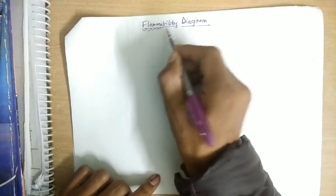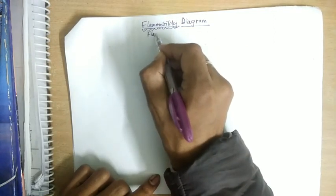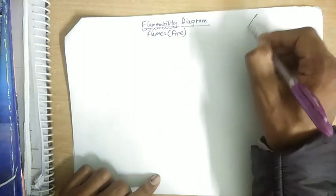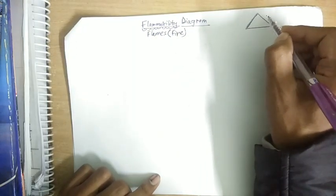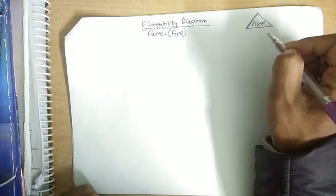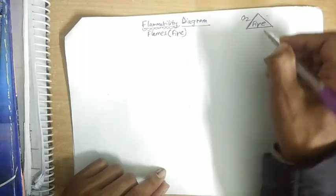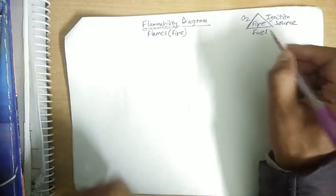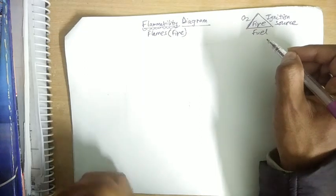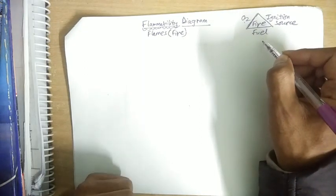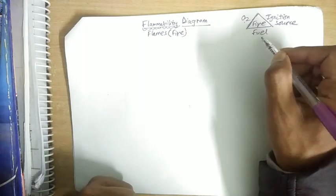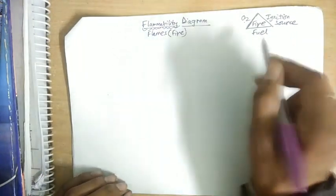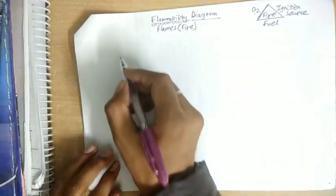The flammability diagram relates to the ability to cause flames, i.e., fire. For a fire to occur we need three things — represented by the fire triangle: oxygen, fuel, and an ignition source. All three components must be present; oxygen and fuel alone won't cause fire without an ignition source, and fuel plus ignition source without oxygen cannot sustain fire either.